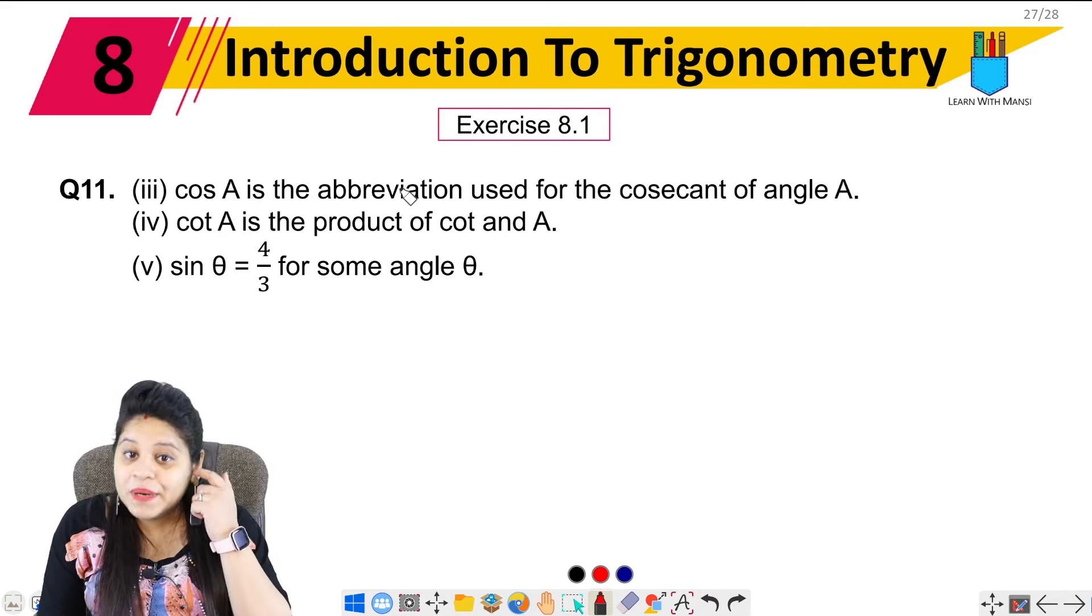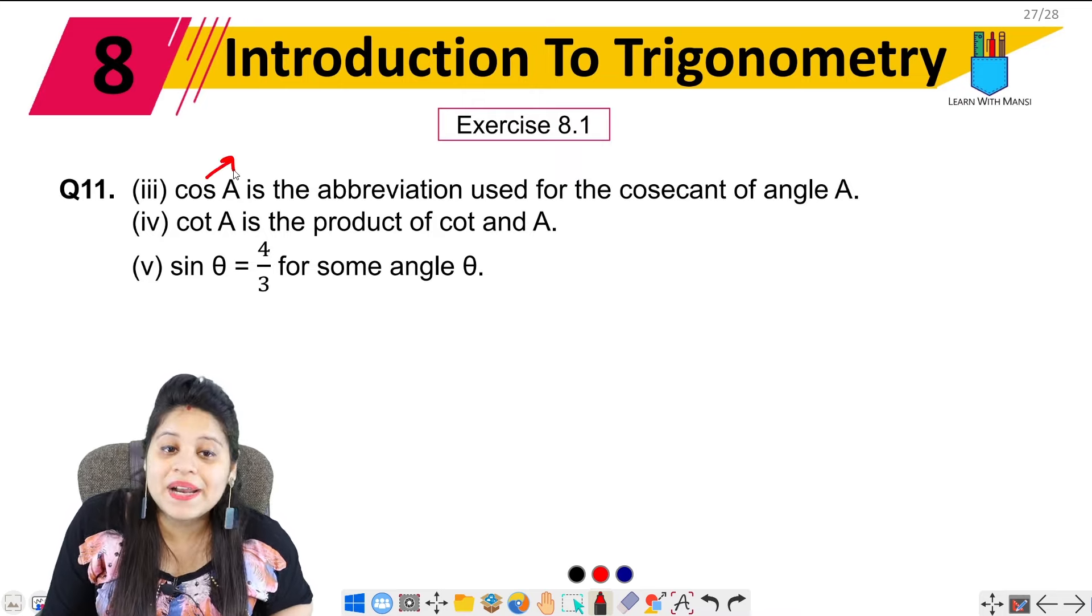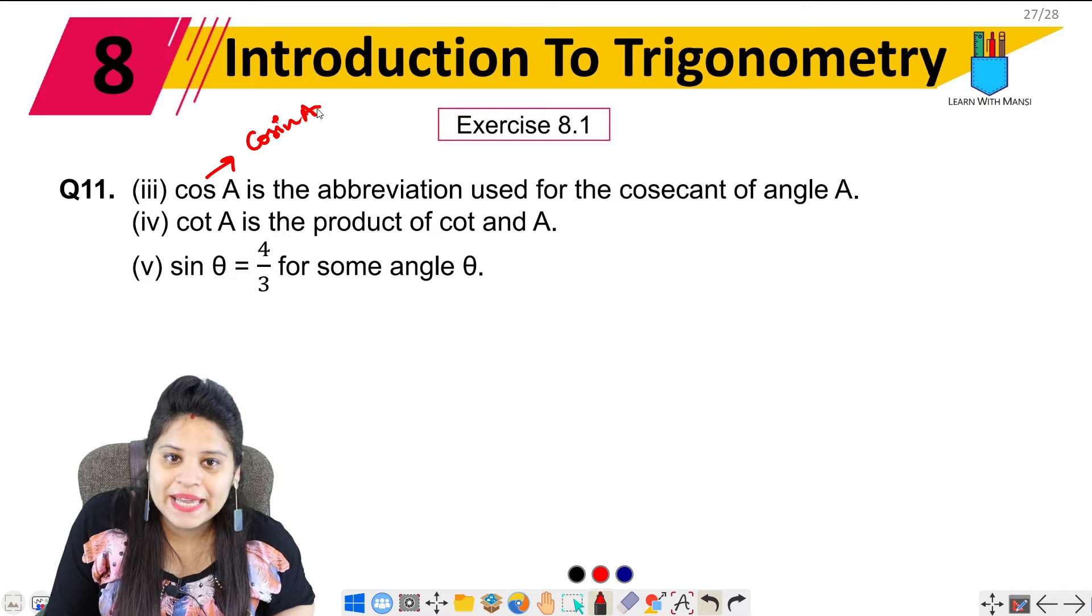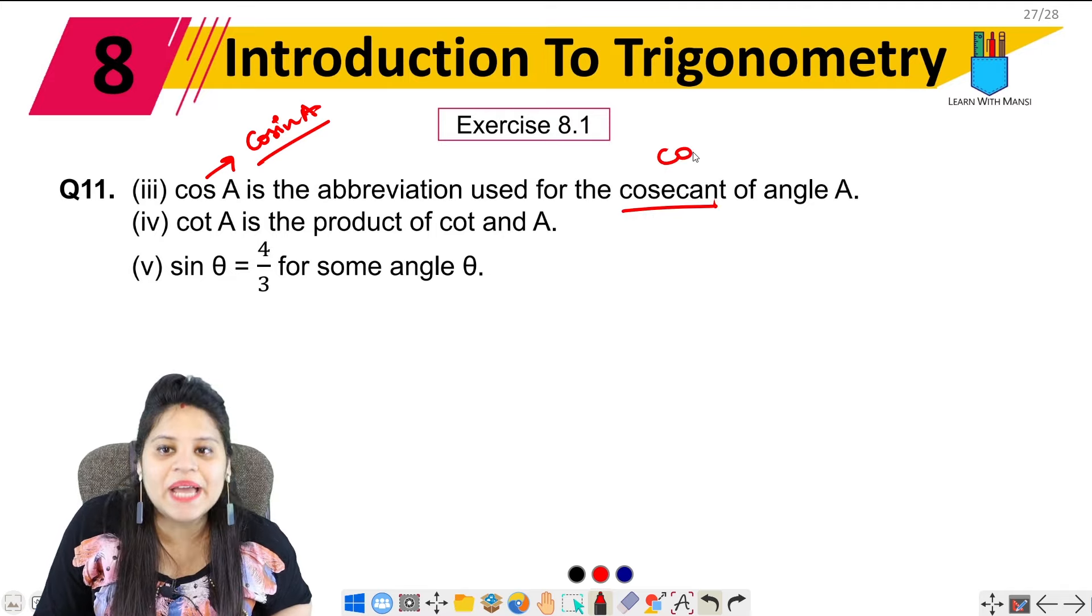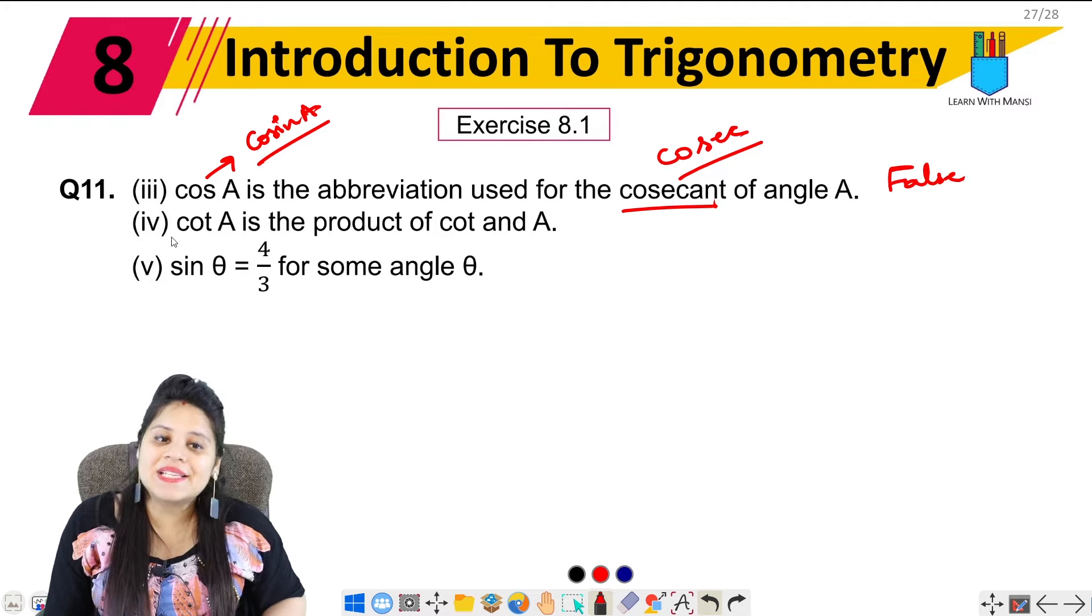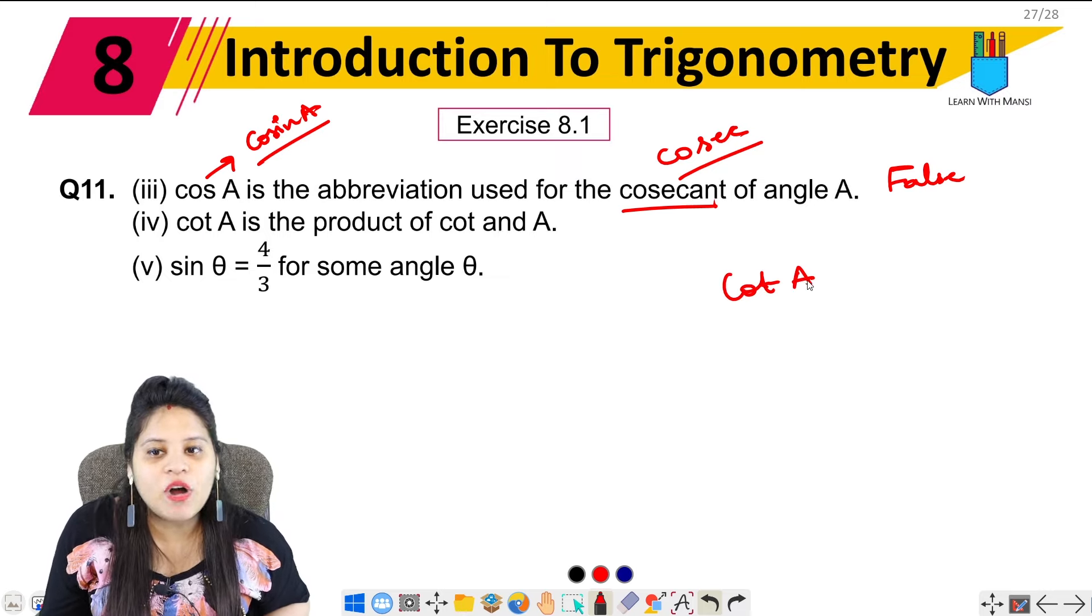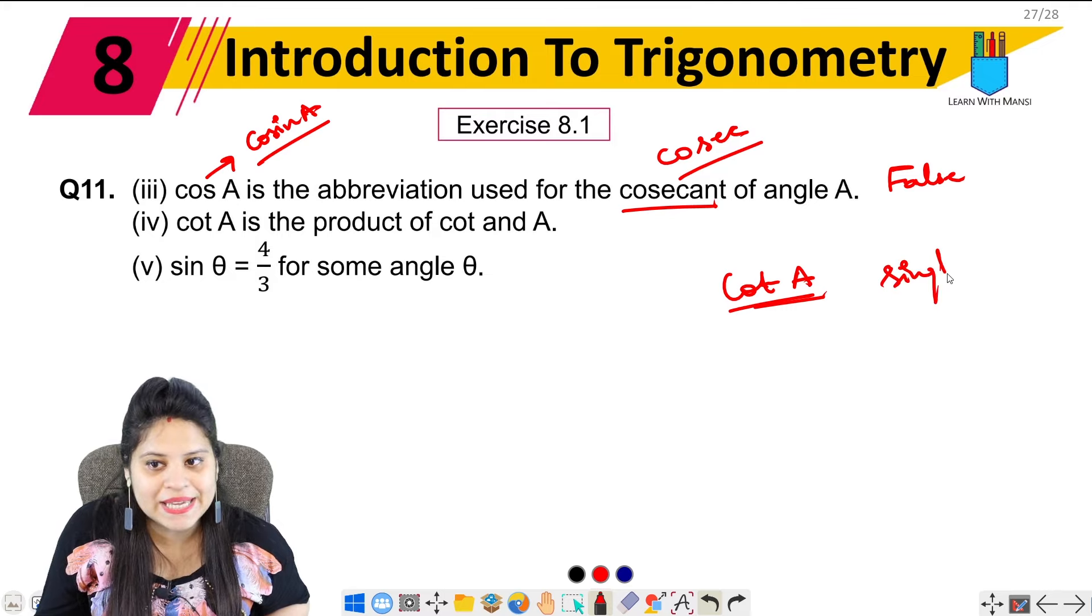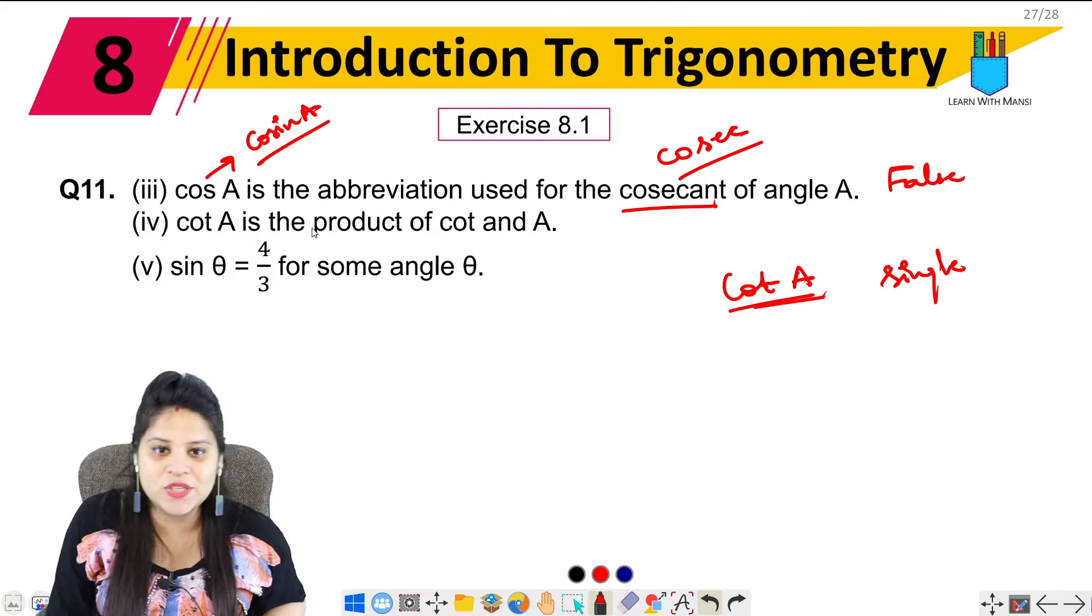Next part. Cos A is the abbreviation used for the cosecant of angle A. No, Cos A is the abbreviation used for the cosine of A, not cosecant. This is a single term. So this statement is also a wrong statement. So it is false.